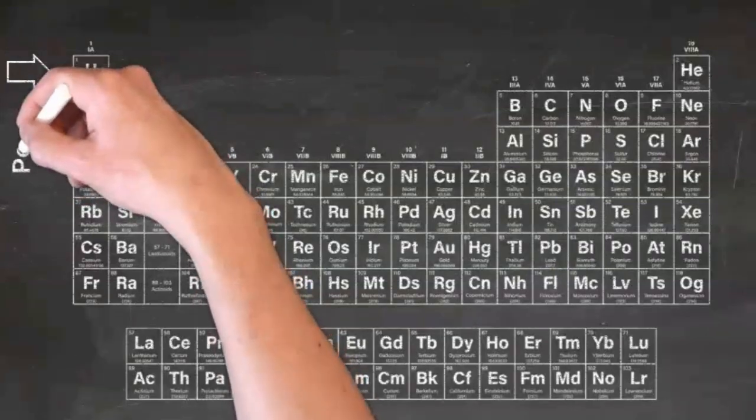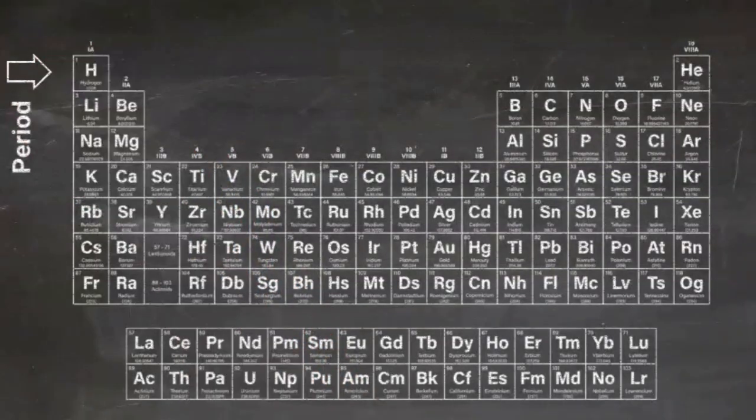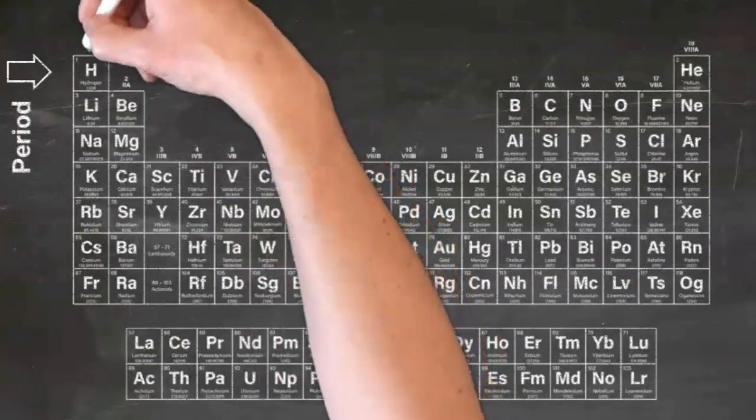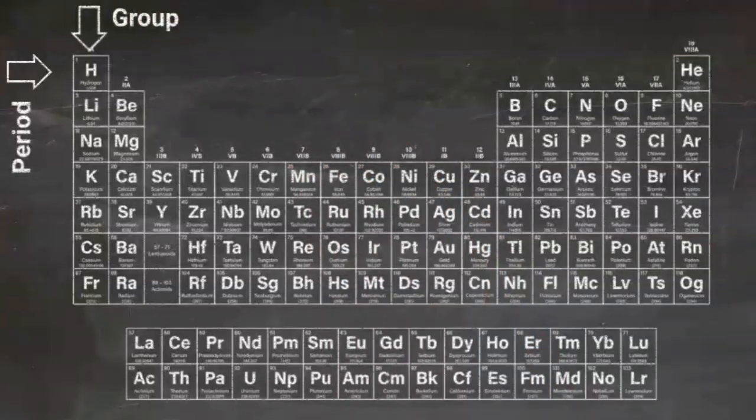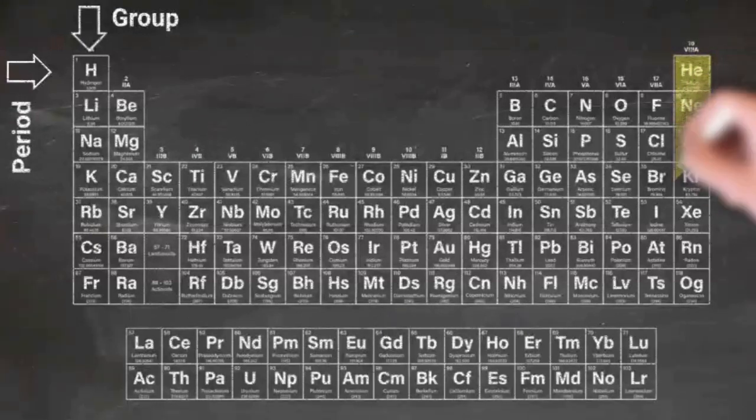Rows are known as periods, from which the periodic table gets its name. Columns are known as groups. There are other categories of elements. For example, the inert or non-reactive gases in group 18 are known as noble gases.